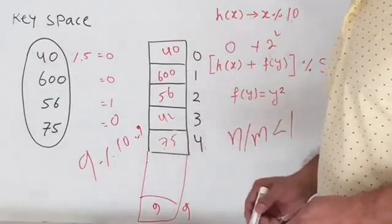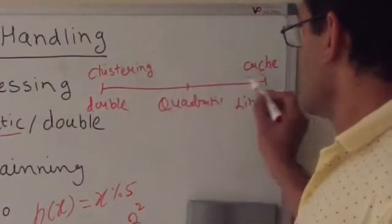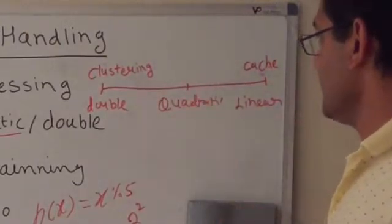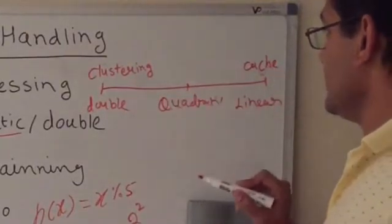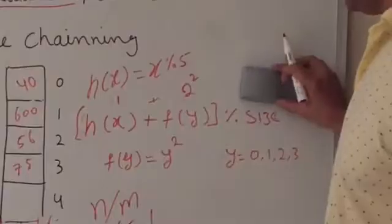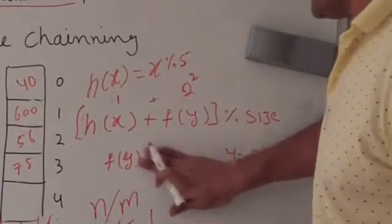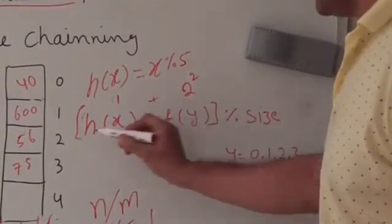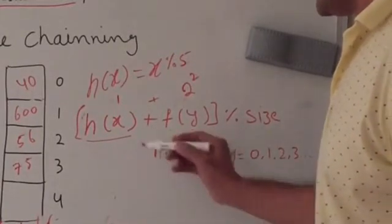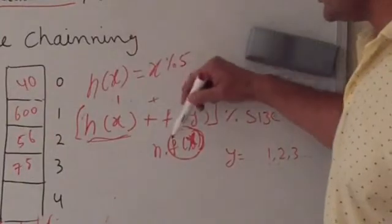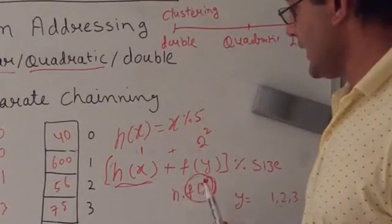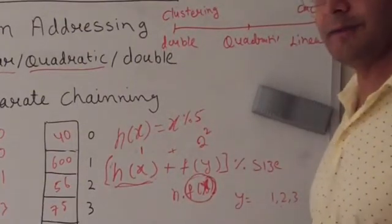On a scale from clustering to cache management: linear probing has very good cache management and very bad cluster management. Quadratic probing falls in between. Double hashing has very good cluster management and very poor cache management. Double hashing uses a new function — h(x) + n × f(x) — so we use two hash functions to better manage collisions. But we have to do a lot of computation because of these two hash functions, so the cache management is very bad.